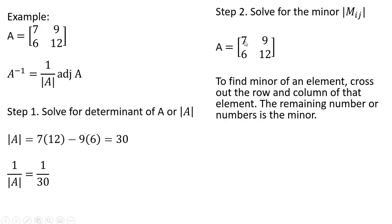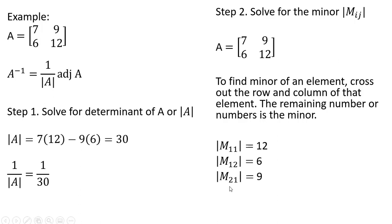To find the minor of an element — for example, the minor of element 7 — we cross out the row and column of that element, and the remaining number is the minor. So the minor for row 1, column 1 is 12. The minor for row 1, column 2: cross out the row and column, and you're left with 6. The minor for row 2, column 1 is 9. And the minor for row 2, column 2: cross out the column and row, and you're left with 7.